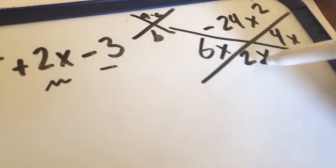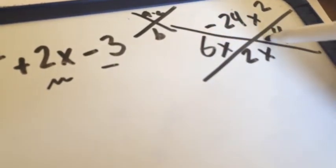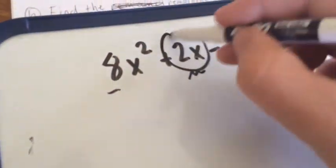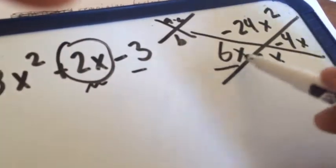6x times negative 4x will give you that. We're splitting apart this middle term and replacing it with these two terms.